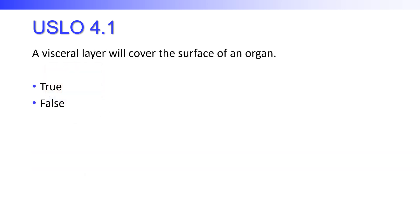A visceral layer will cover the surface of an organ — true or false? You have two layers: the visceral and the parietal. And true, it is the visceral layer that lies against the organ.